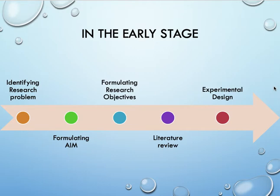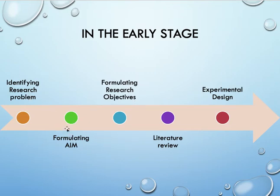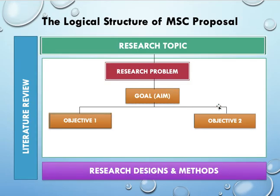In the early stage, you identify the research problem, then formulate the aim. You identify the research problem, highlight the aim — what you're going to solve — then formulate the research objectives based on the aim. Then do the literature review and then the experimental design. The aim comes from the research problem; the objectives will fulfill the aims; the review will fulfill all the objectives on how to conduct the study. This is the logical structure for the MSC proposal: research topic → research problem → aim → at least two objectives → research design and methodology. The literature review covers from the beginning until the end because you need to find appropriate methods, algorithms, or techniques to solve your problem.